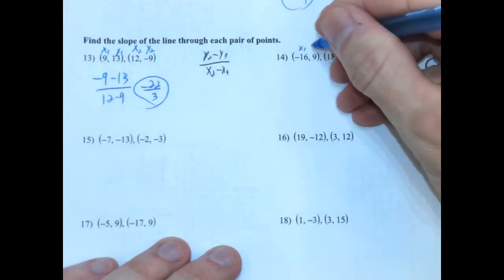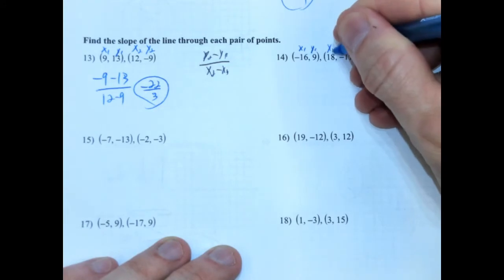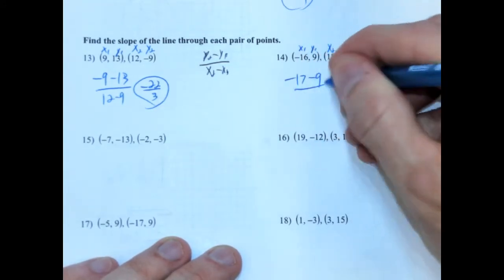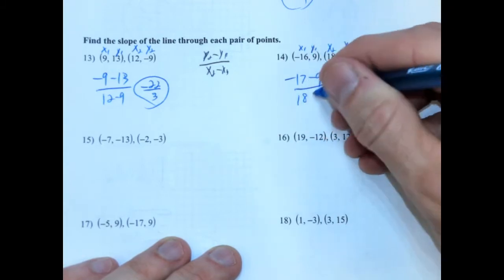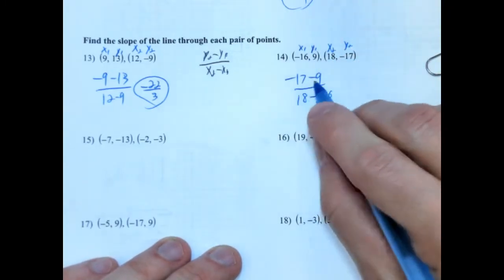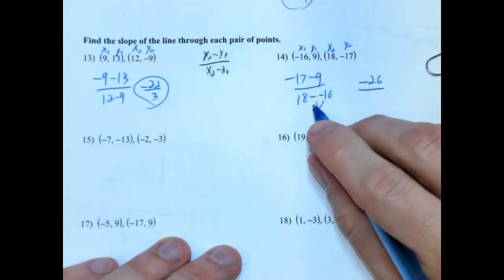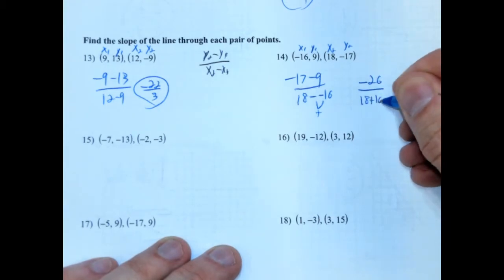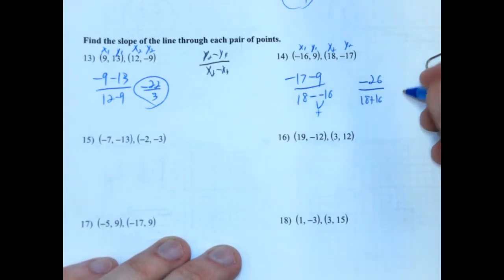Here we have x1, y1, and x2, y2. So our y2 is negative 17 minus 9. And then 18 is our x2 minus negative 16. So we have a double negative here. So it's going to become plus. So negative 17 minus 9 is negative 26. And then this becomes plus. So I'm going to rewrite that. 18 plus 16. 18 plus 16, I believe, is 34. So negative 26 over 34. They're both divisible by 2. So it's going to become negative 13 over 17. And that's it.